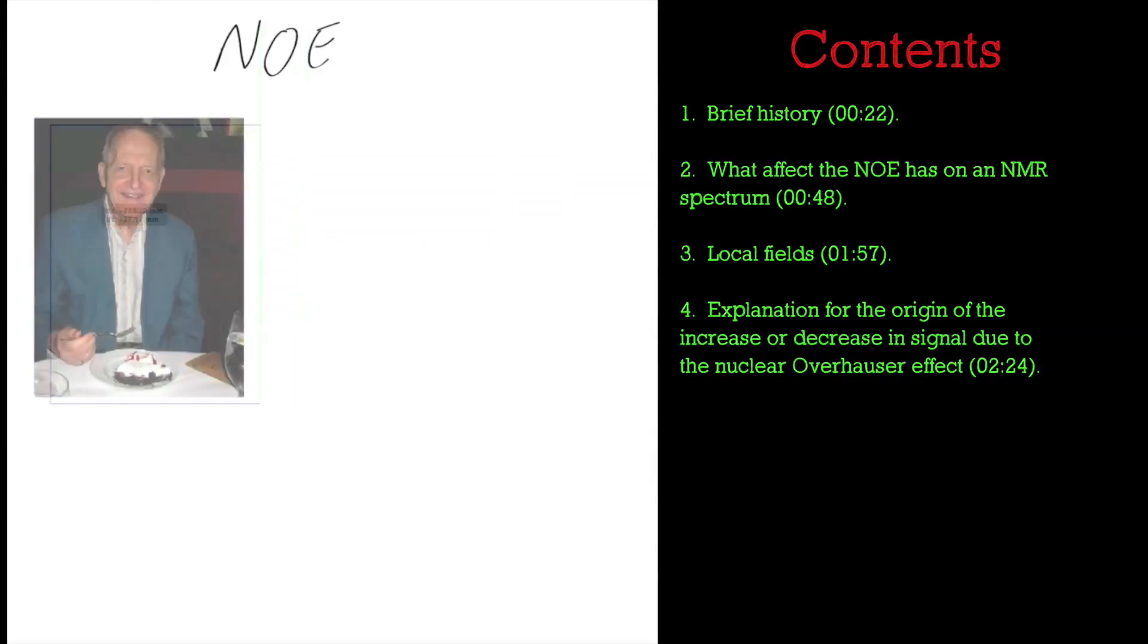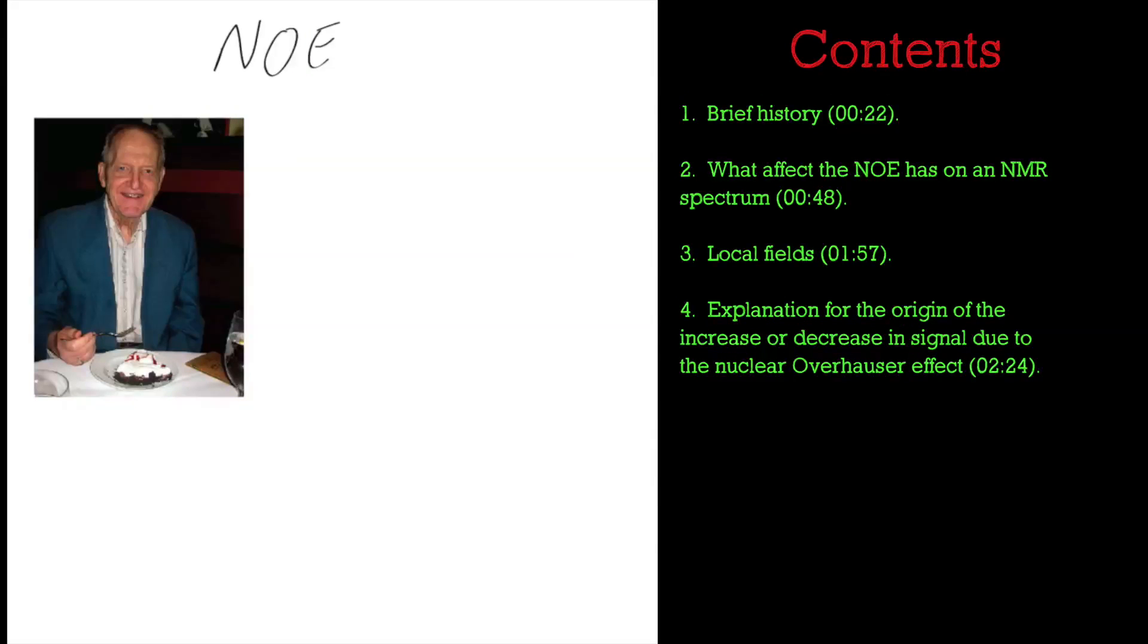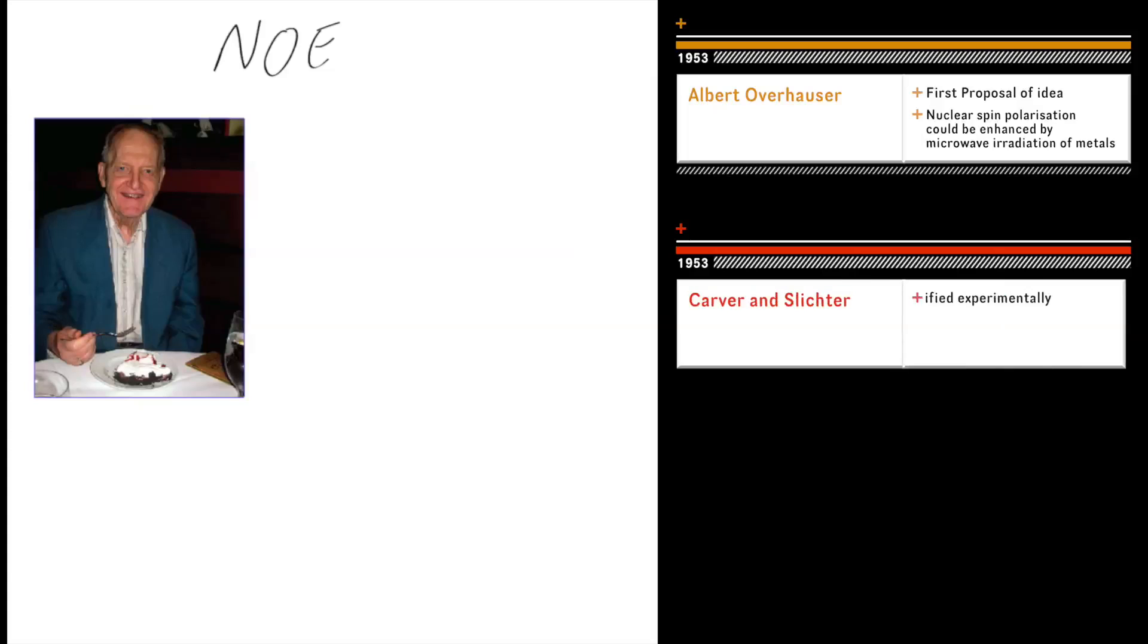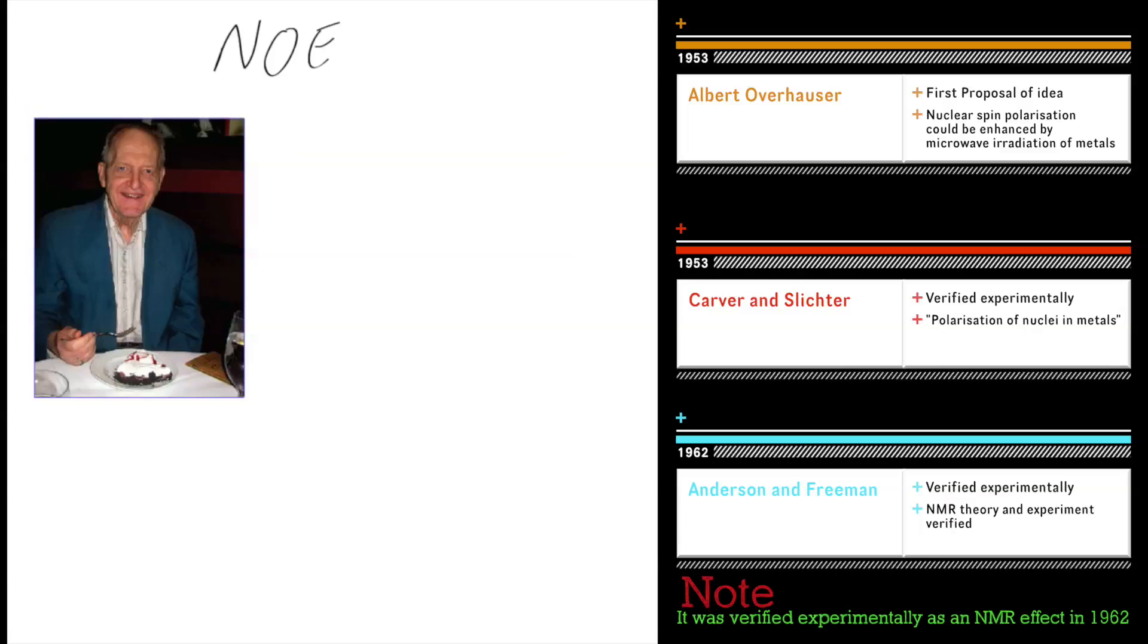Hi, I'd just like to talk about NOEs in NMR spectroscopy. NOEs were first proposed in 1953 by Albert Overhauser and first demonstrated by Carver and Slichter in 1953 also, but weren't verified experimentally until 1962 by Freeman and Anderson.